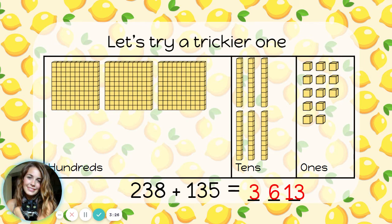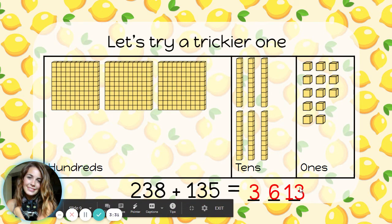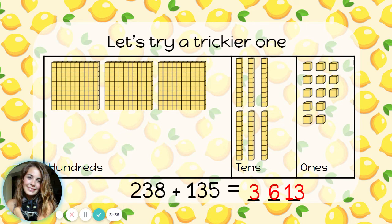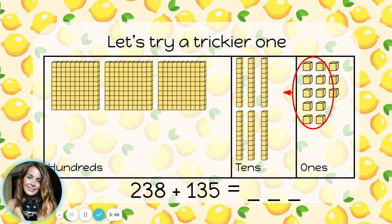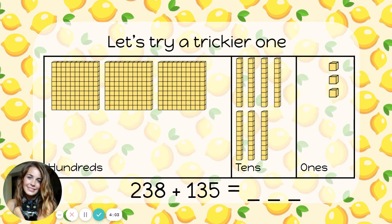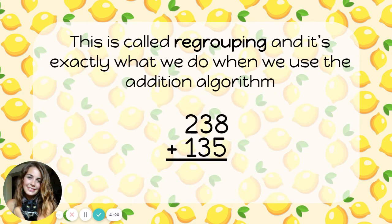That answer doesn't look quite right. I know I can't put a 13 in the ones place — each of these places can only hold one digit. I have too many ones. Thirteen ones is too many to put in one place. I need to move some of these ones over to be with the tens. Remember that a group of ten ones is really another ten, so let's move it over to be with the tens. Now I see only three ones, but I have seven tens and three hundreds. So 238 plus 135 is 373.